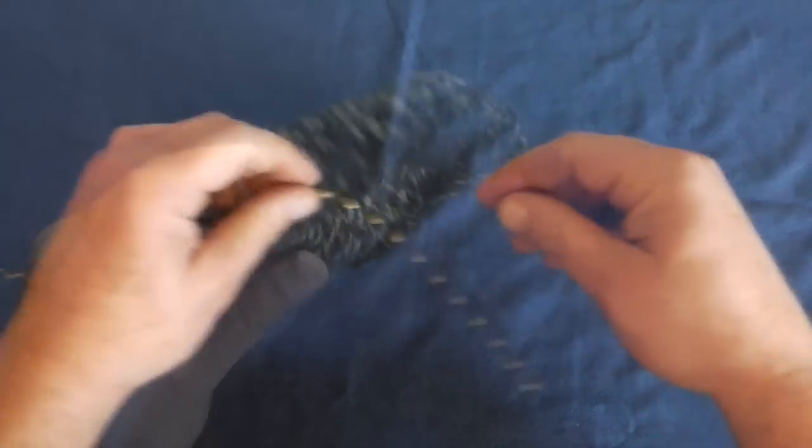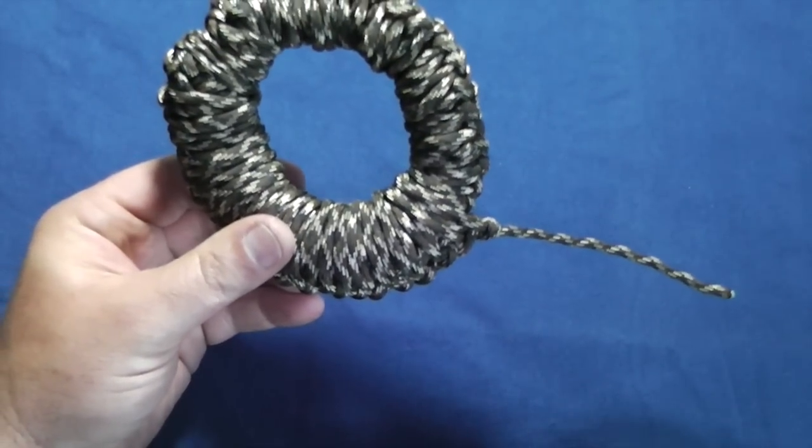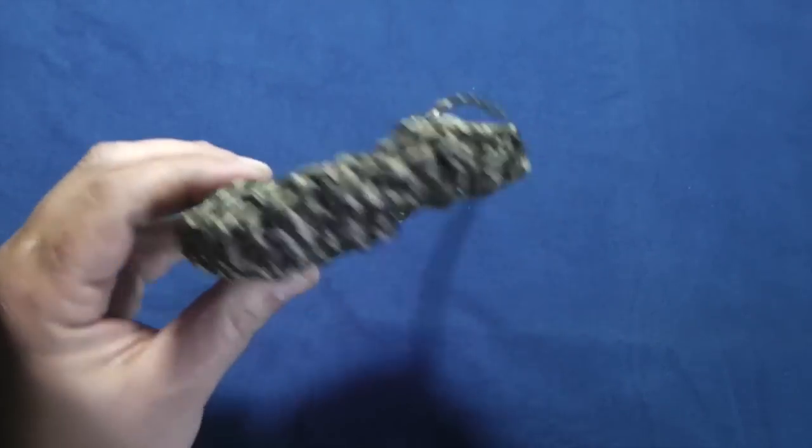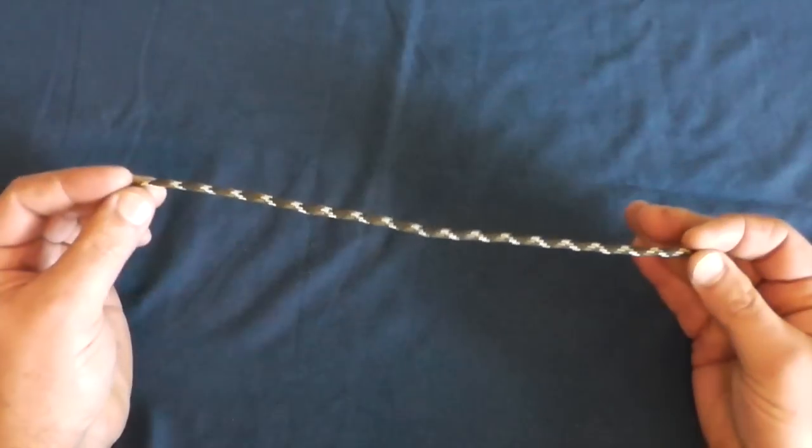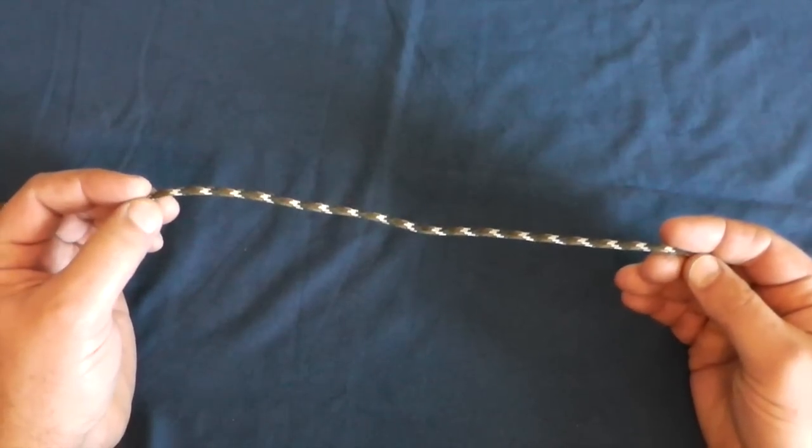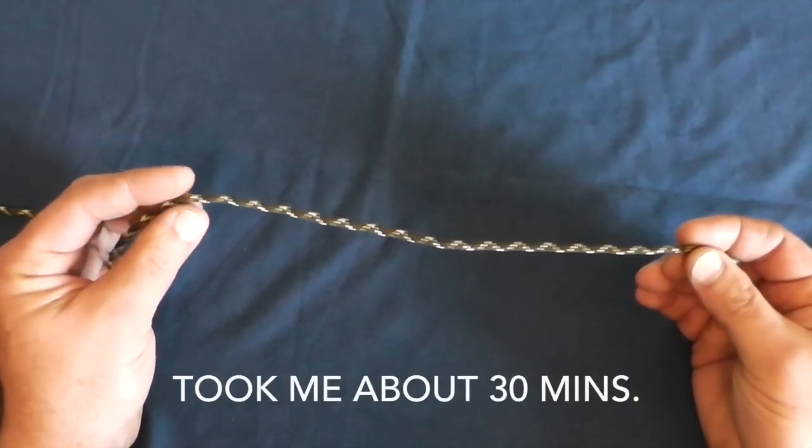The first thing you need to do is grab the length of paracord that you'd like to work with. Today I have about 75 feet. You're not going to watch the whole thing, I'll cut it in and out as I go, but I want to show you specifically how to start it. Once you have it started it's just a matter of methodically putting it together the rest of the way because it does take a little bit of time.